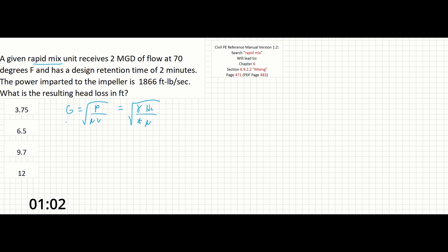Where G is the velocity gradient, P is the power, V is volume, mu is dynamic viscosity, gamma is specific weight of water, HL is the head loss, and T is time.